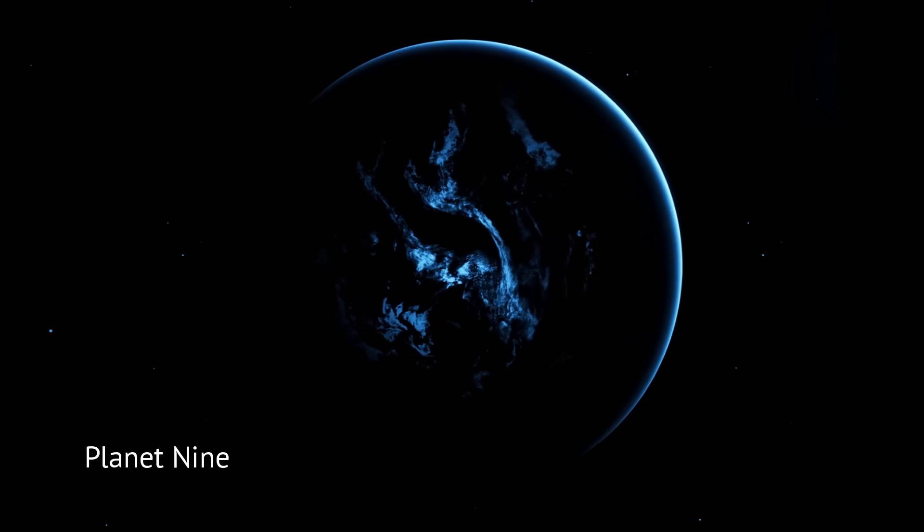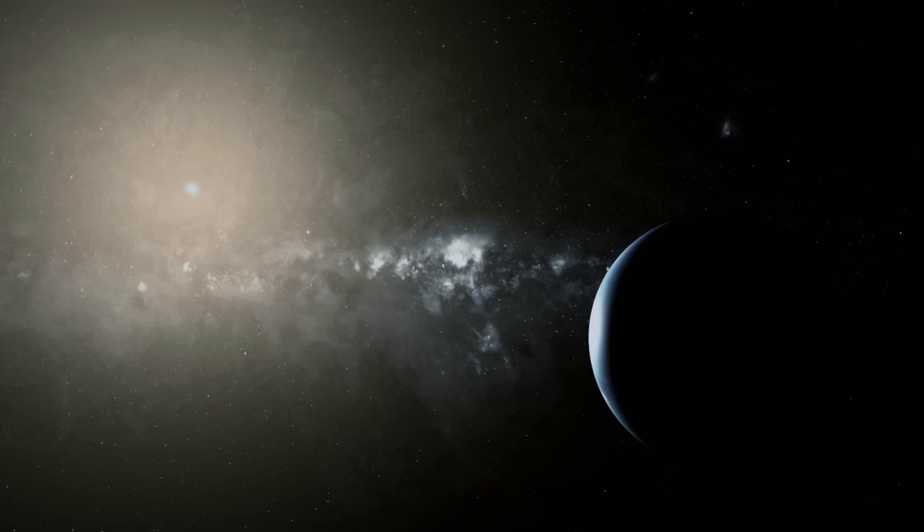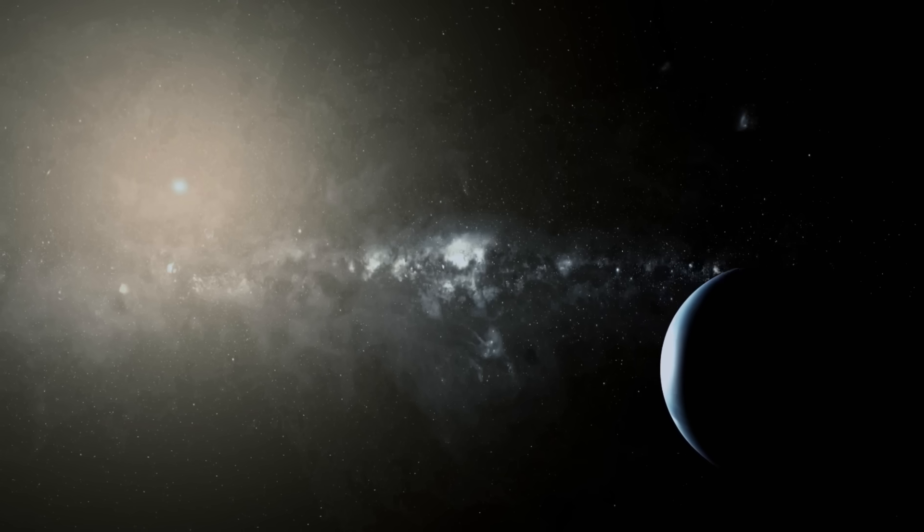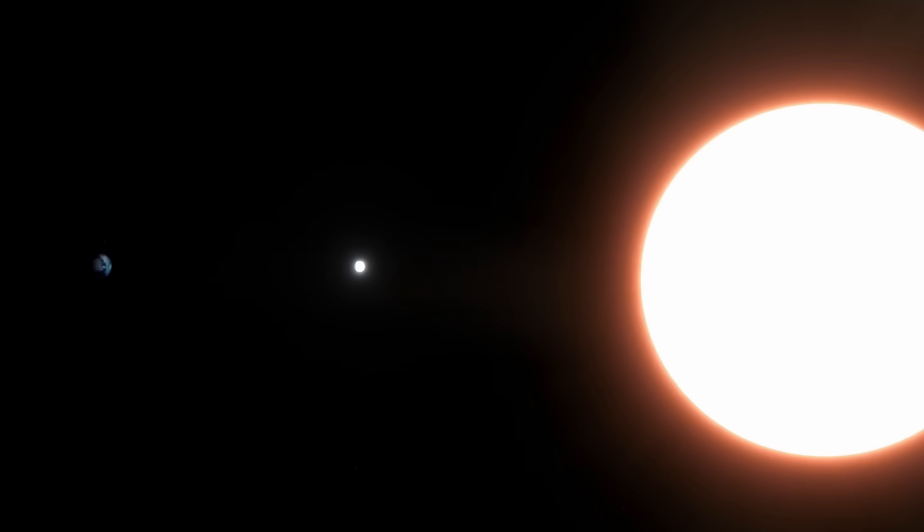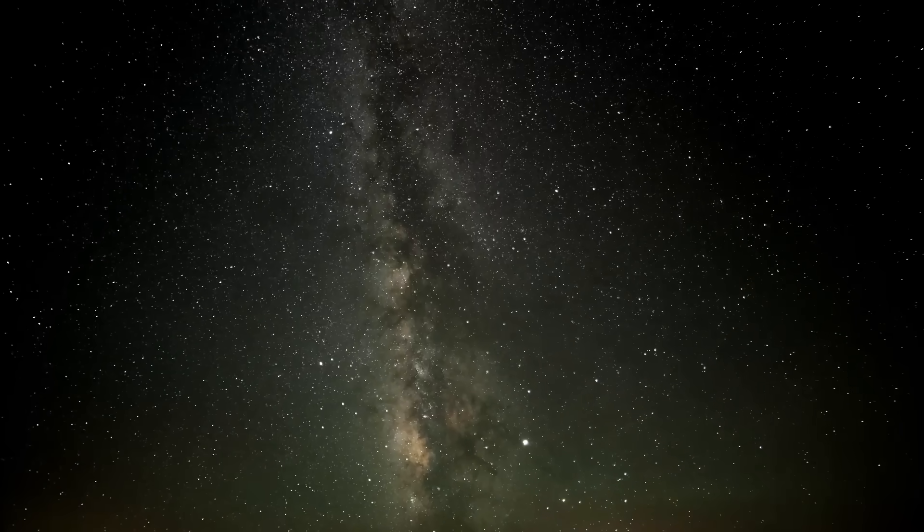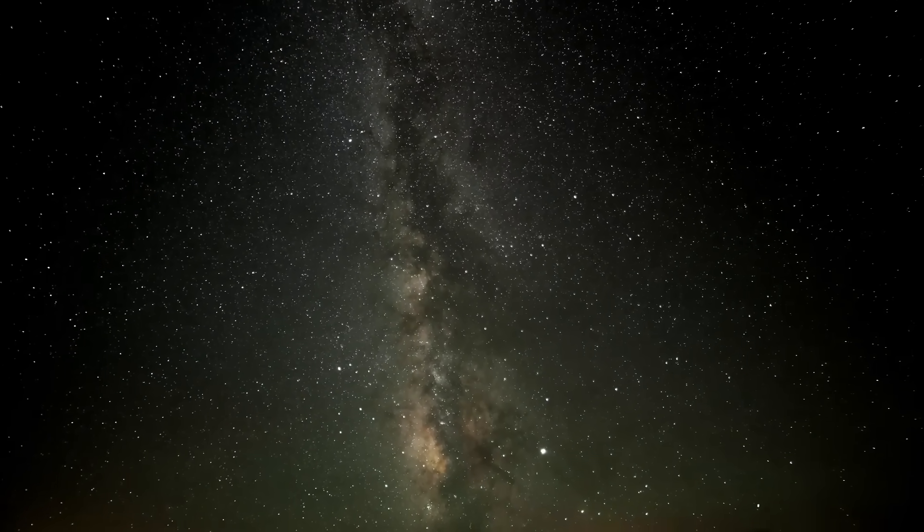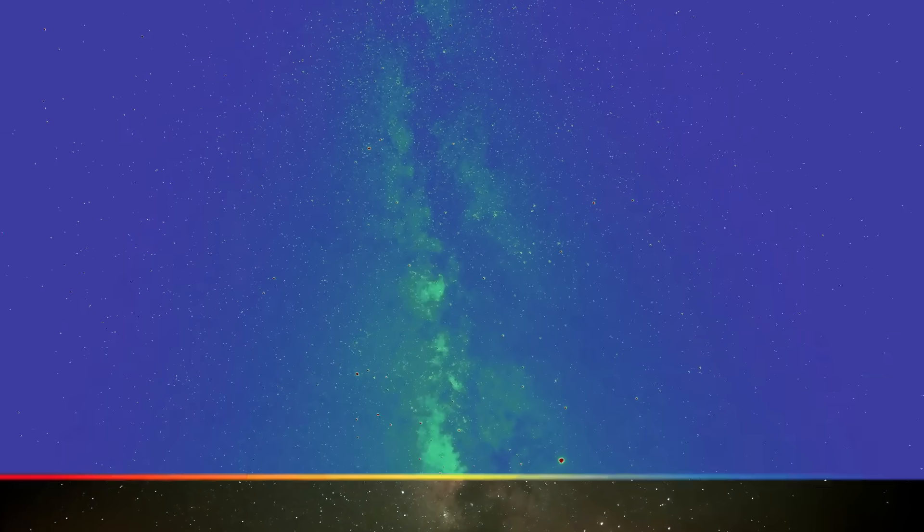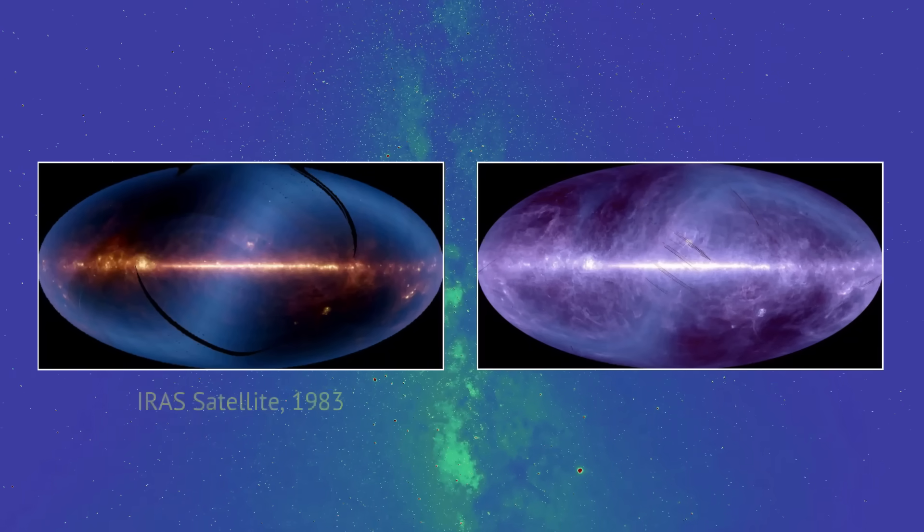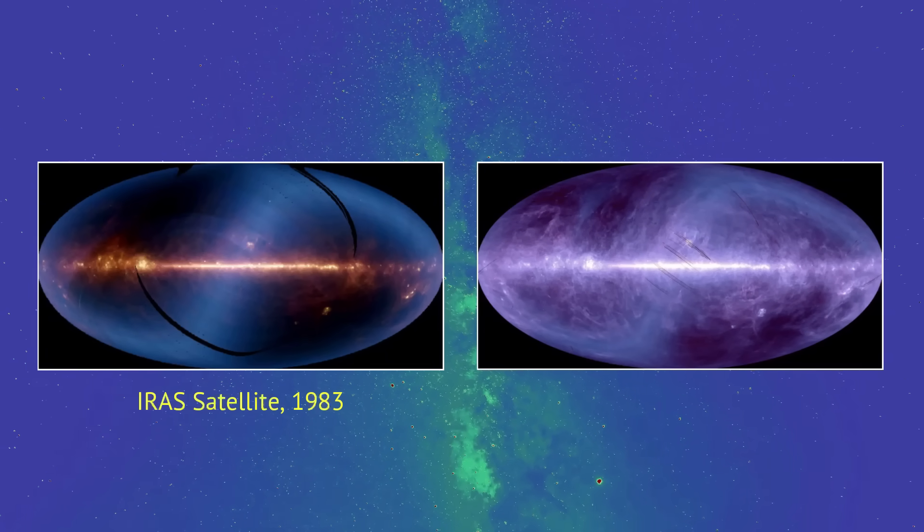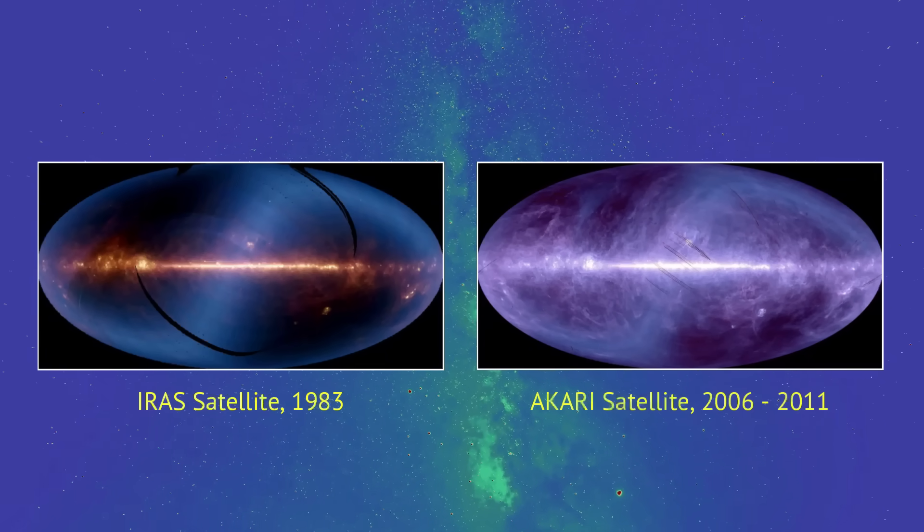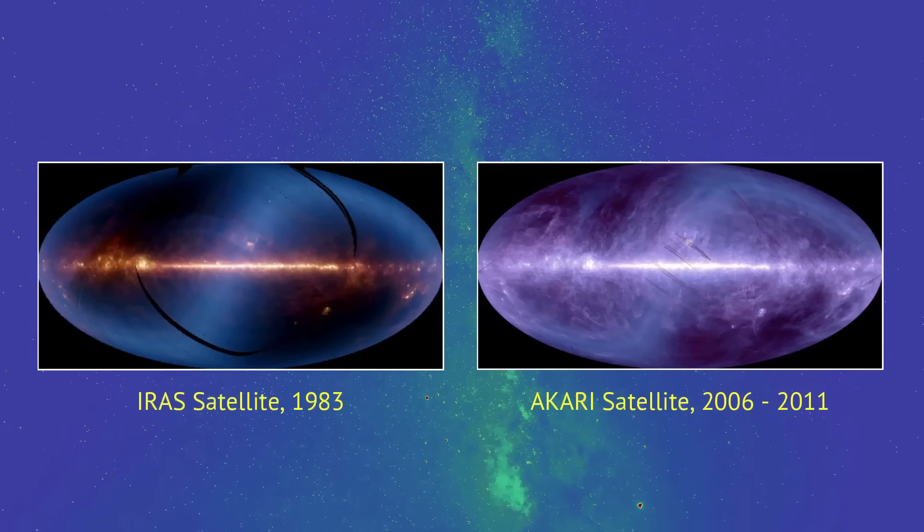They called it Planet Nine. And ever since, astronomers have been on its trail, chasing shadows at the edge of the solar system. Now the farther away something is, the harder it is to see, especially if it doesn't reflect much sunlight. So to find Planet Nine, scientists went digging through two infrared surveys of the sky.